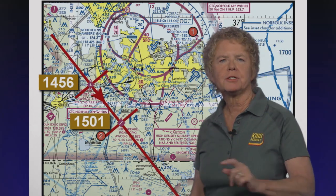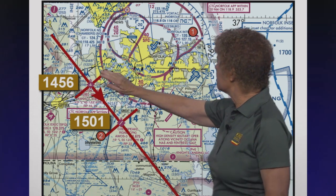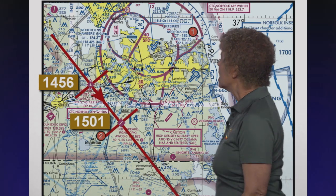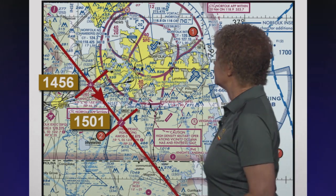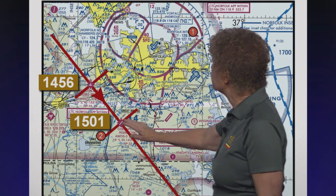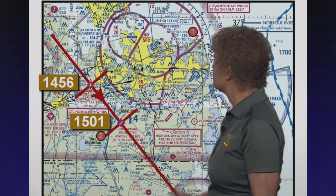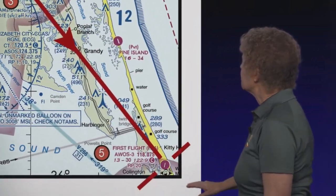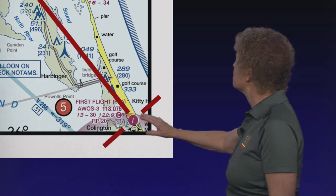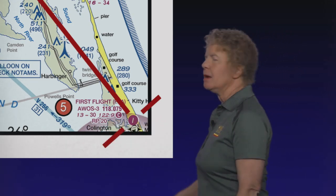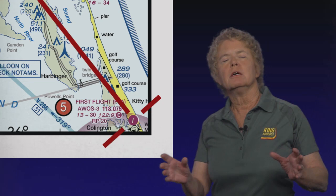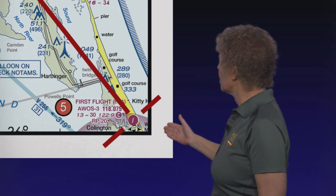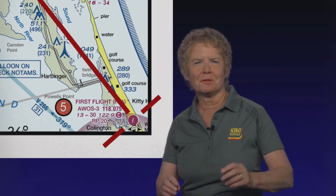Let's assume that you're over Hampton Roads Airport, which is in the upper left-hand corner of the chart near Area 2, and you cross it at 1456. You then cross Chesapeake Regional Airport at 1501. And where you're going is First Flight Airport, which is down here in the lower right-hand corner of the chart near Area 5. What you want to know is, given that information, when are you going to arrive at First Flight Airport? Are you going to get there before your fuel runs out?